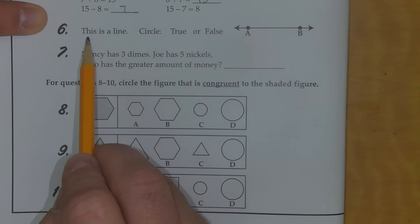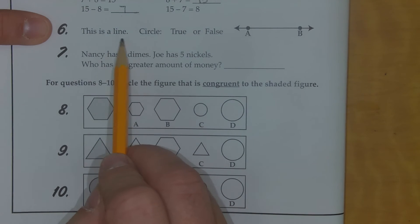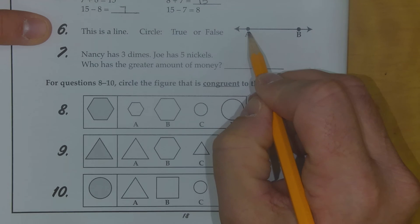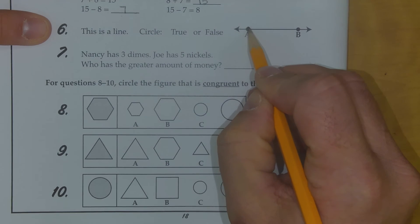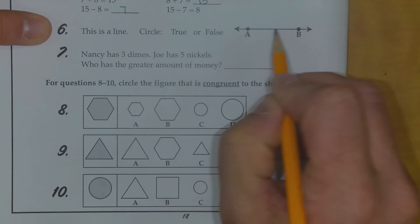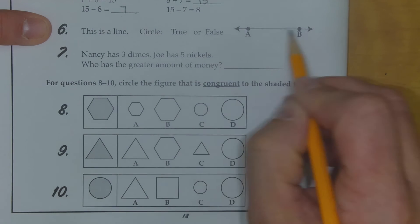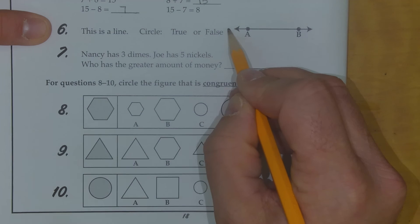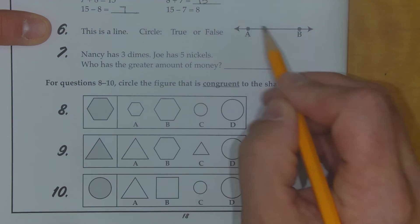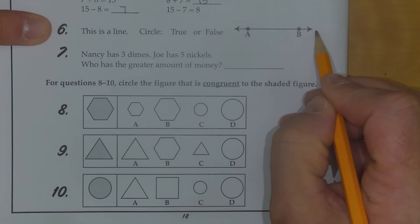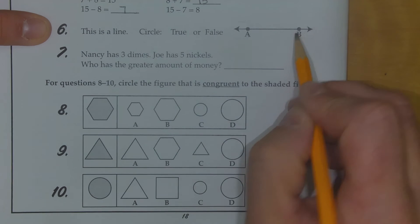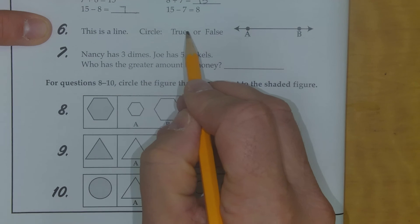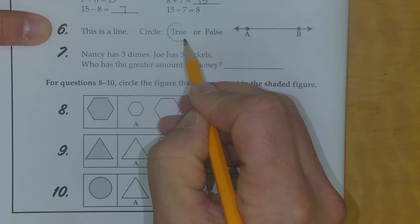Number 6 says this is a line. This is geometry. And you're going to circle true or false. And remember, we've been talking about line segments. Line segments end right here with the points. But a line continues on forever, and you can tell a line because it has these arrows at the end after these two points. So for this one, I'm just going to tell you, yes, you should circle true. This is a line.